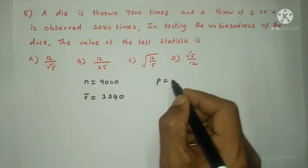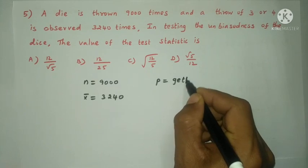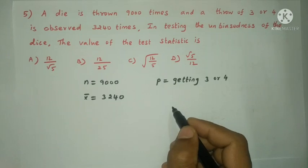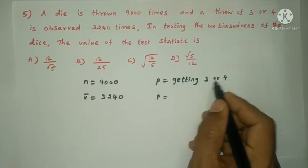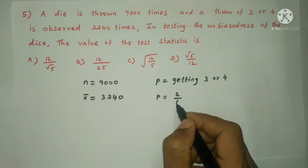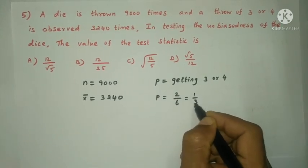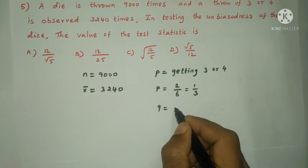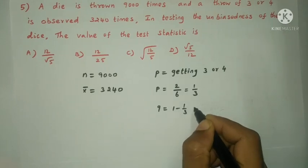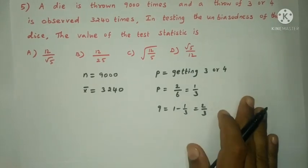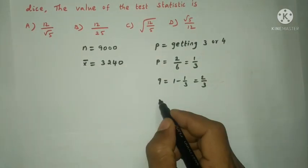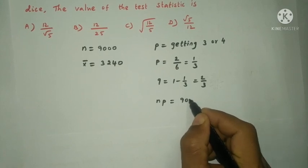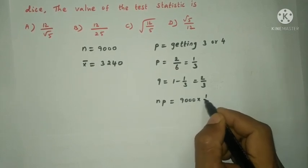P for getting 3 or 4 is 2 chances out of 6, that is equal to 1 by 3. P equal to 1 by 3, Q equal to 1 minus 1 by 3, that is equal to 2 by 3.